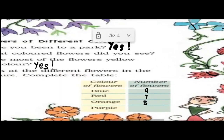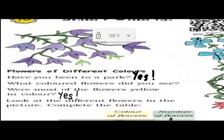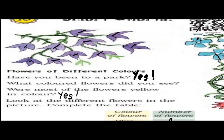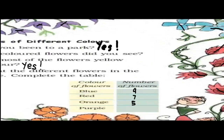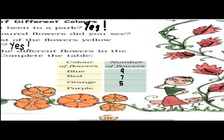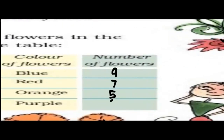Next, about purple flowers — let us start counting: one, two, three, four, five, six, seven, eight, nine, ten. So many purple flowers are there, right? We will write ten purple flowers.